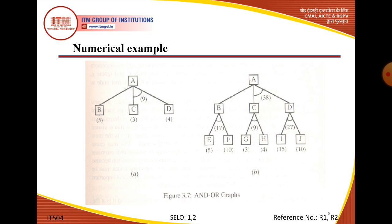B के साथ move करेंगे क्योंकि हमारी minimum cost B के साथ 6 है। B को expand करते हैं तो E और F children मिलते हैं जिनकी cost 5 और 10 है। Five plus ten fifteen, then 1 plus 1 मिलाके B की cost हो गई 17। Cost revise हो गई — B की cost 17। ऐसे ही C के साथ देखें: 3 और 4, then 1 plus 1 मिलाके 9 होगी। I और J की cost 15 और 10, D की cost 27। A की final cost 38 हो जाती है।